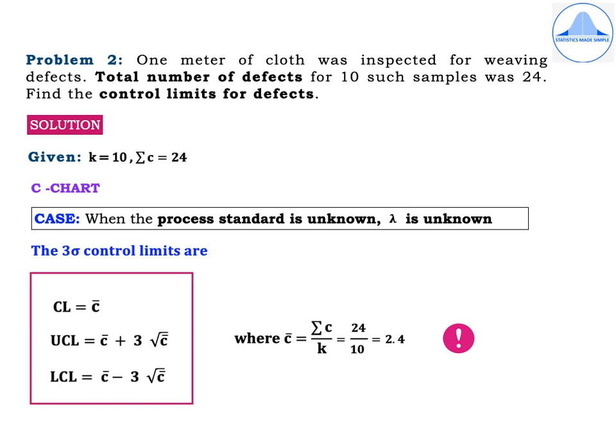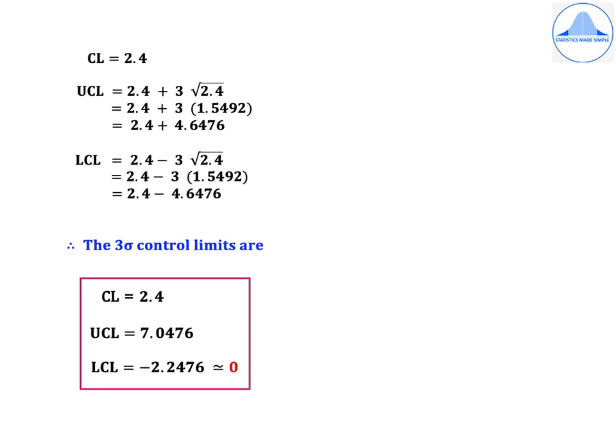In this problem, K samples are taken and then the number of defects are found in each of the samples. Hence, it is a case of the process standard lambda being unknown. Therefore, the 3-sigma control limits are: CL = 2.4, UCL = 2.4 + 3√2.4 = 2.4 + 3×1.5492 = 2.4 + 4.6476. Similarly, LCL = 2.4 − 3√2.4 = 2.4 − 4.6476. Therefore, the 3-sigma control limits are CL = 2.4, UCL = 7.0476, and LCL = −2.2476, which is approximated to 0.